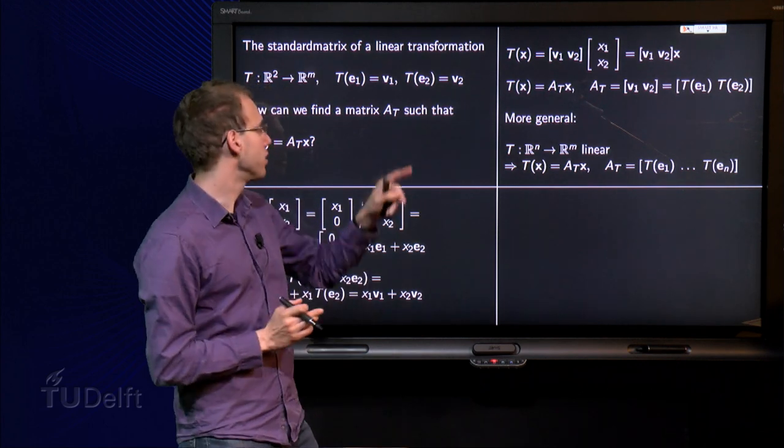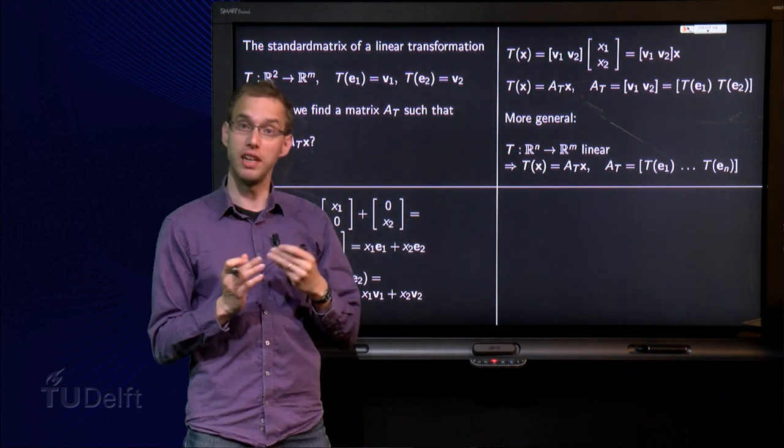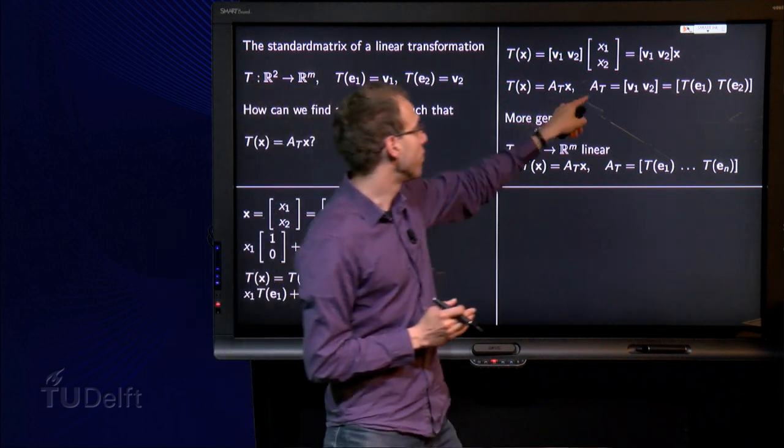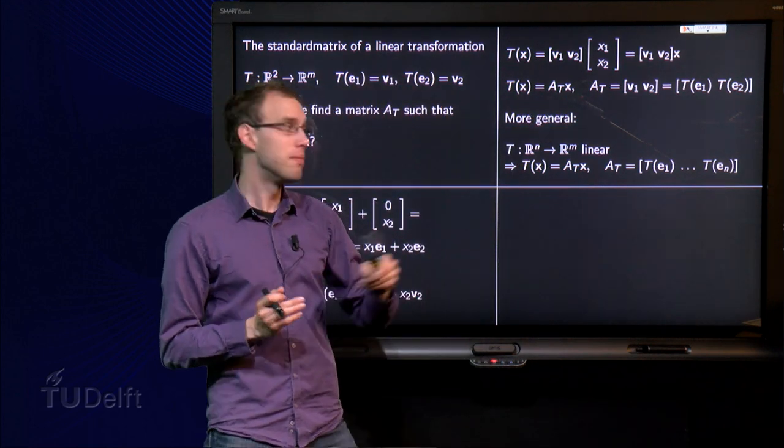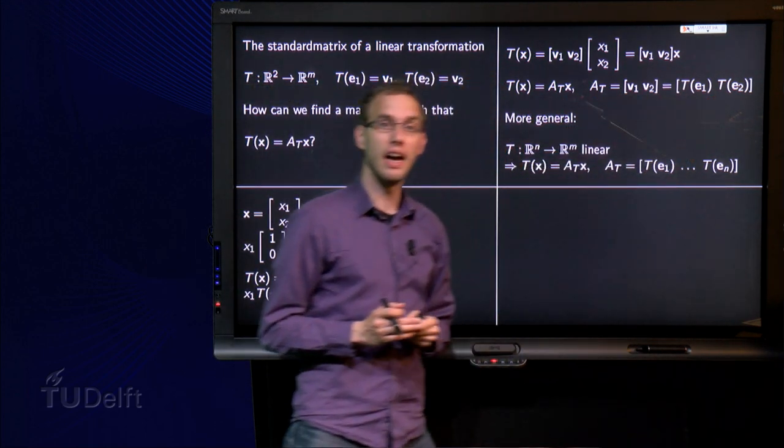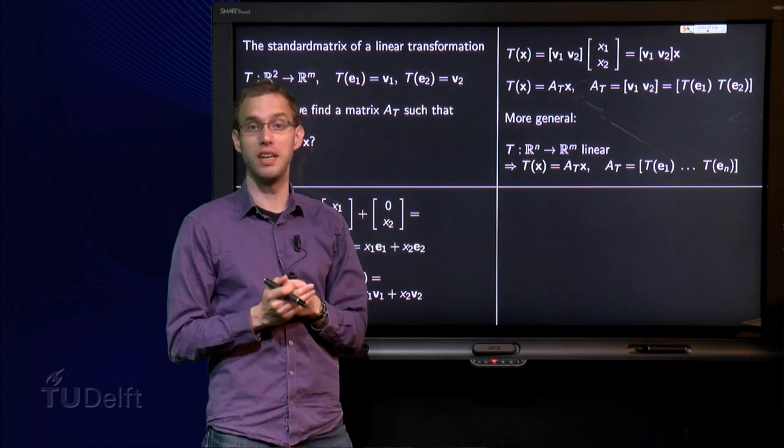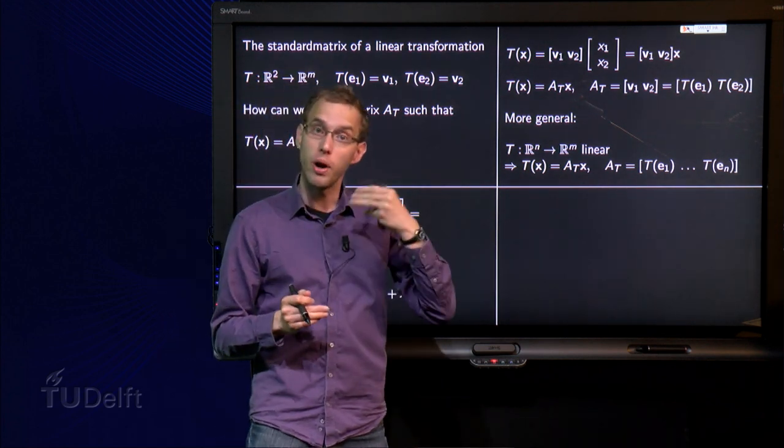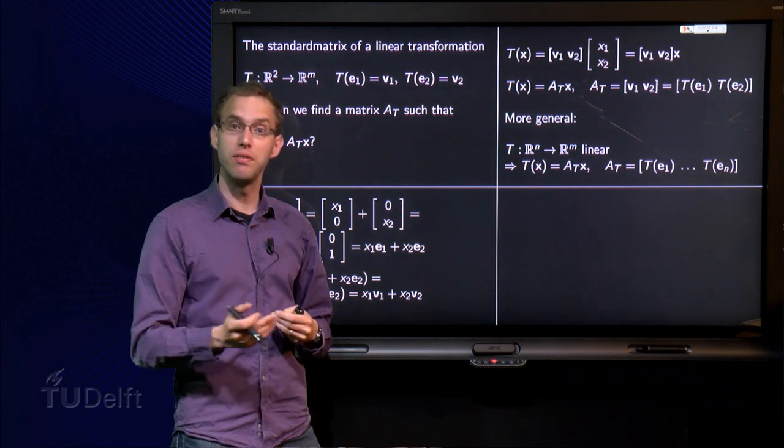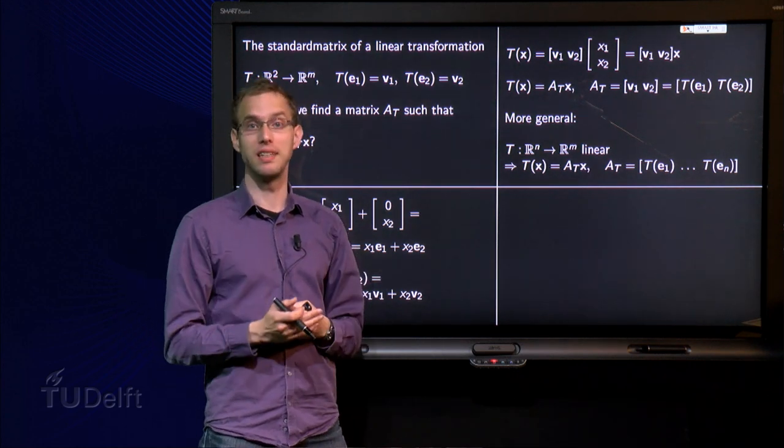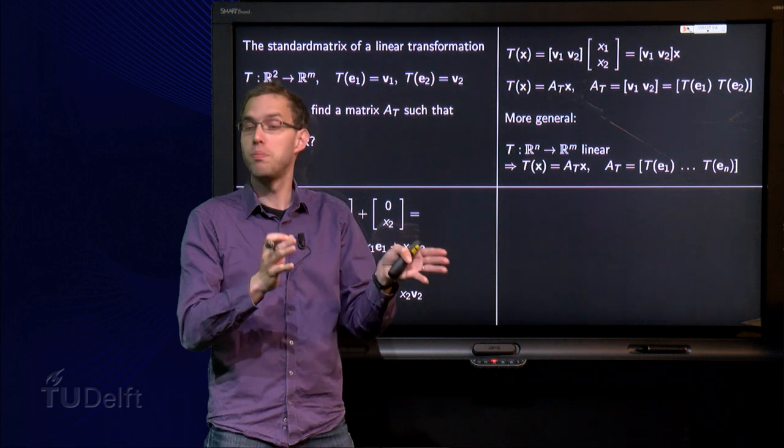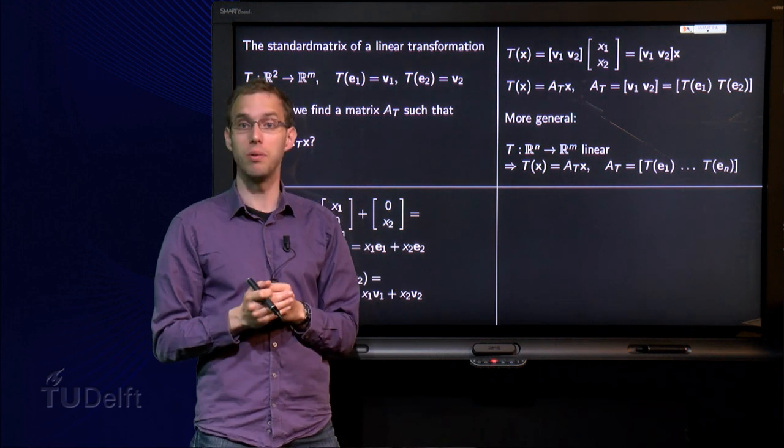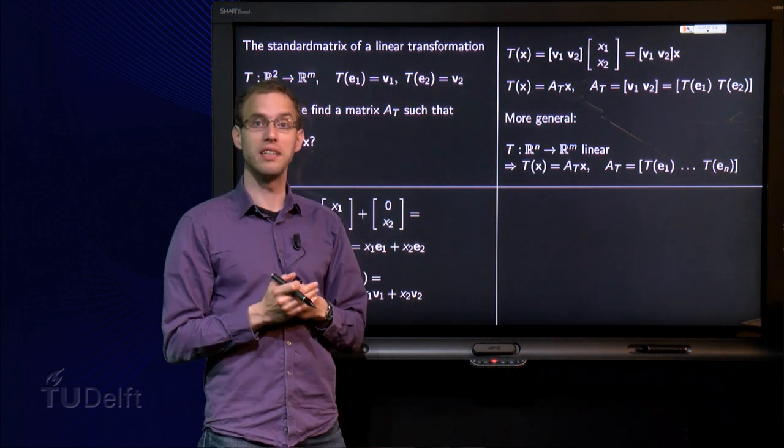But what are these vectors? Well these vectors are the images of E1 and E2. So I find the matrix AT by putting T of E1 and T of E2 as columns in the matrix. So if we know T of E1 and T of E2, we can find the matrix AT. We only have to place them in two columns and that's the way we get a matrix.